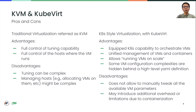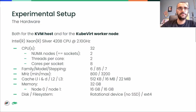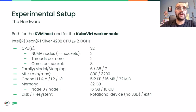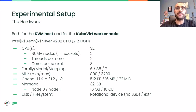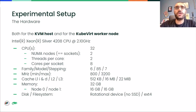From now on, Dario will talk about the environment setup and tuning. Since this talk is about the results of some experiments we have run, let's have a look at the experimental setup. We used a 32 physical CPU server, both as the KVM host and as the KubeVirt worker node — the hardware where the VMs were actually running in both configurations. It had two NUMA nodes with eight cores each and hyper-threading enabled.